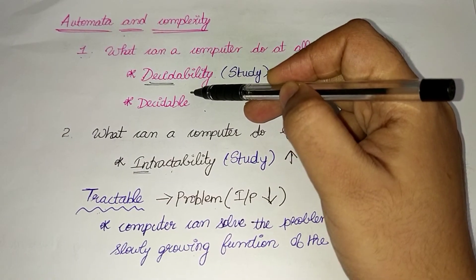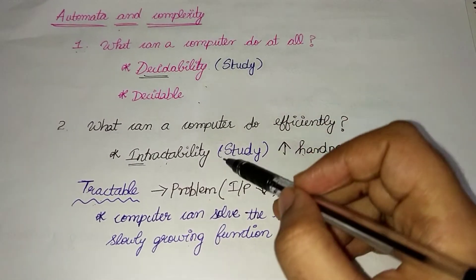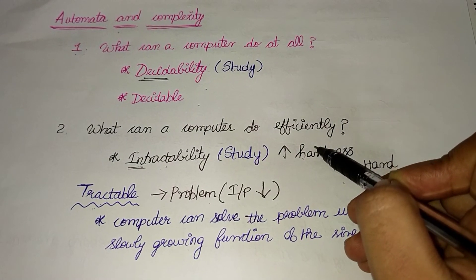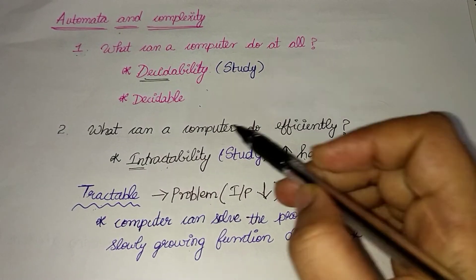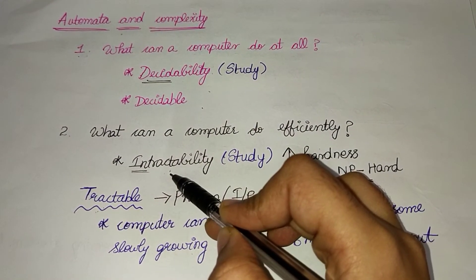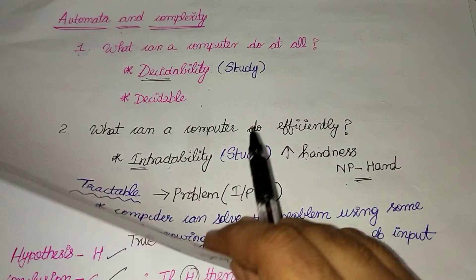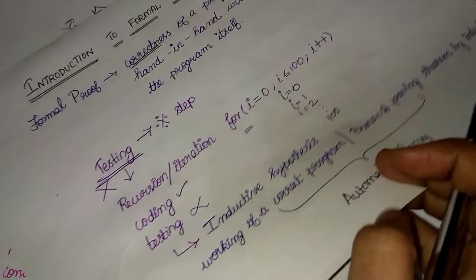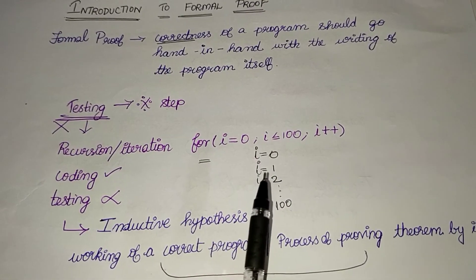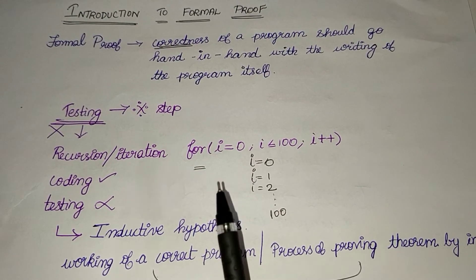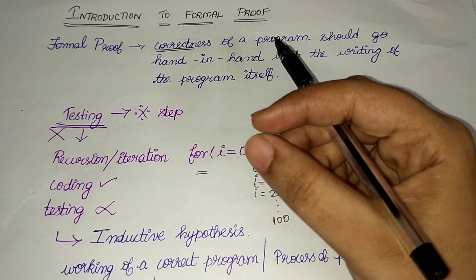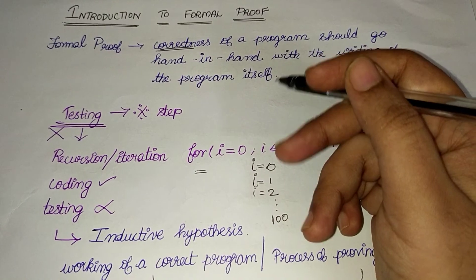Decidability: if you look at the problem, it is easy to solve. That is the next topic — Introduction to Formal Proof. I will show you in the next video.